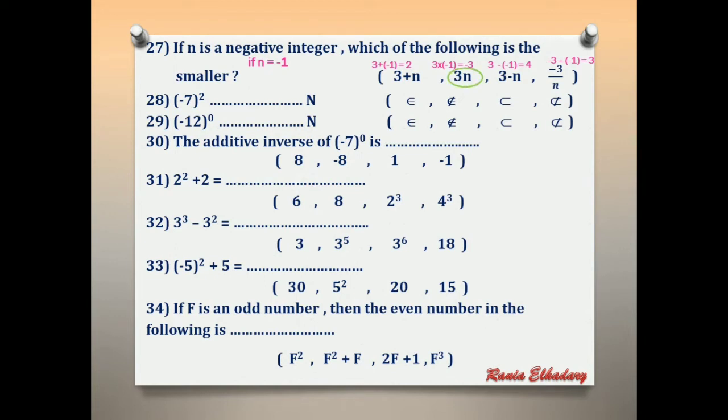Number 28: (negative 7) power 2 — N. Negative 7 all power 2 equals 49. Does 49 exist in N? Yes, it belongs to N.